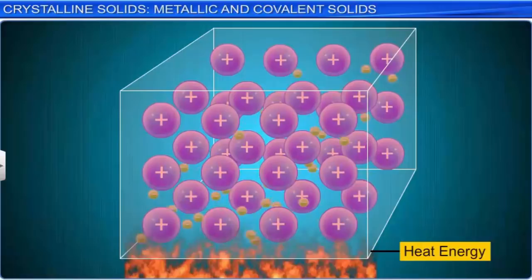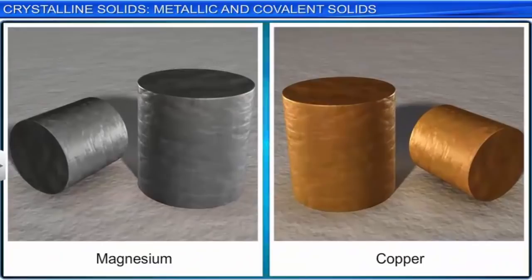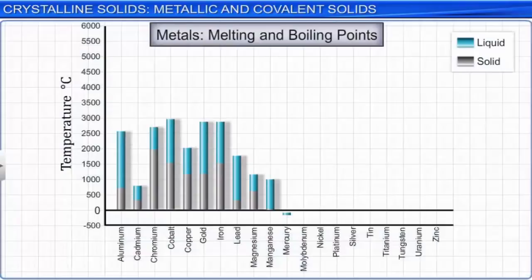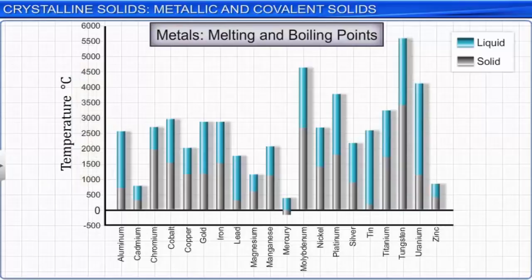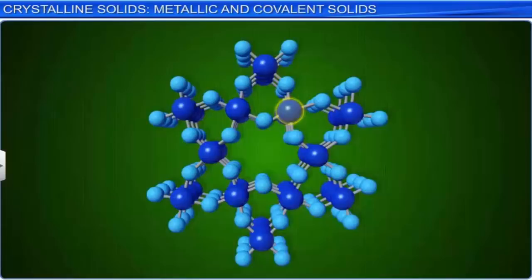The presence of free electrons also accounts for the luster and color in some cases. Metals are highly malleable and ductile. Metallic solids have fairly high melting and boiling points. The other type of crystalline solids is covalent or network solids. The constituent particles in these solids are atoms held together in large networks by covalent bonds. This interlocking network of covalent bonds extends throughout the crystal in all directions. Hence, covalent solids are also called network solids or giant molecules.